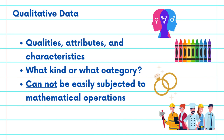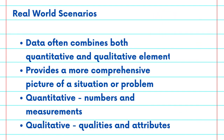Unlike quantitative data, qualitative data can't be easily subjected to mathematical operations. However, it's incredibly valuable for categorizing and understanding the world around us. In many real-world scenarios, data often combines both quantitative and qualitative elements. Together, these data provide a more comprehensive picture of a situation or problem.